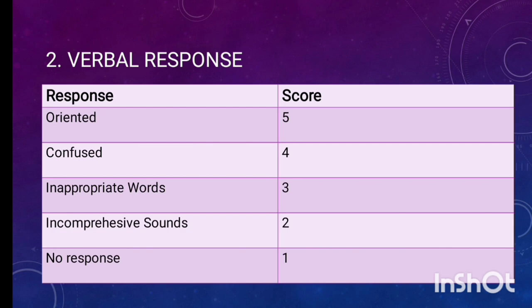In this, the patient will be confused. Like if you are asking the patient's name and if he is giving the answer like saying something else, it means he's confused so we'll give this score 4. The third one is inappropriate words and the scoring is 3.